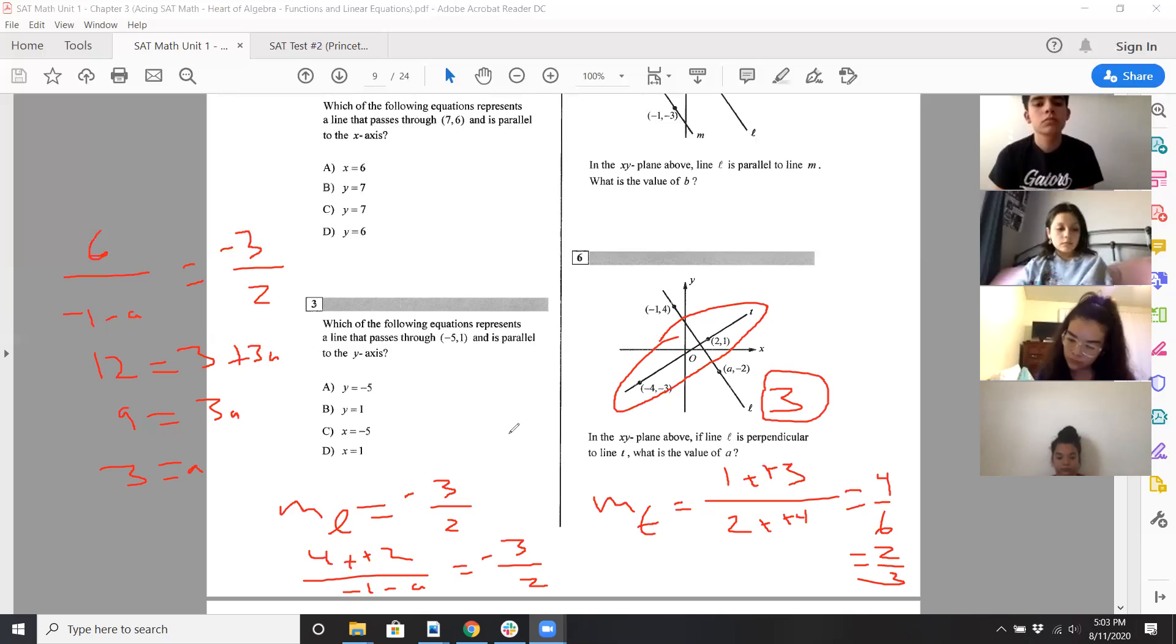So, again, just take some work, but it's not hard conceptually. You guys know slope. You guys know parallel lines have same slope, perpendicular lines have negative reciprocal slopes. You know this. So, yeah, and just do some algebra at that point.